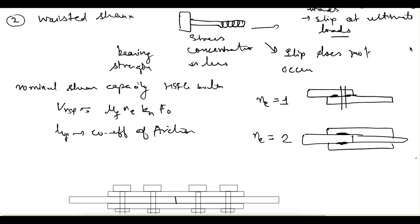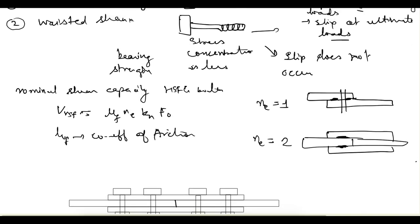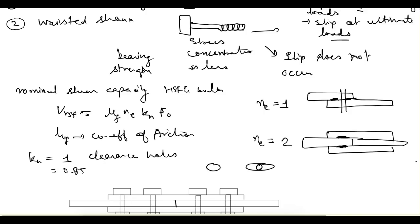For a single cover joint, ne is also 1. The factor kh equals 1 if the fasteners are provided in clearance holes. kh equals 0.85 if the fasteners are in short slotted holes, or if it is a long slotted hole loaded perpendicular to the slot. kh equals 0.7 if it is a long slotted hole loaded parallel to the slot. These are the different values of kh.